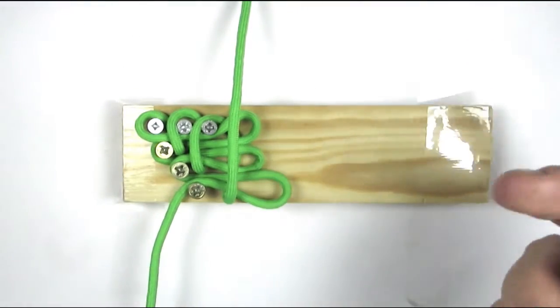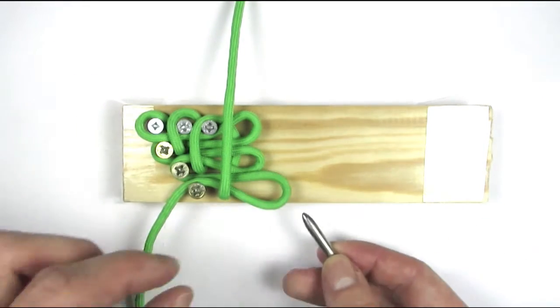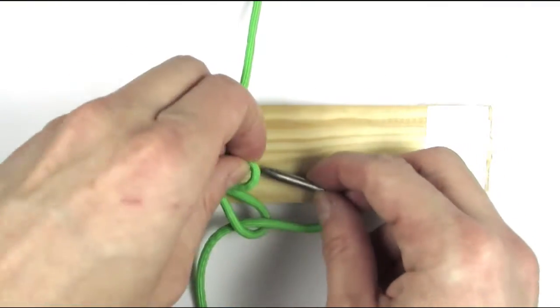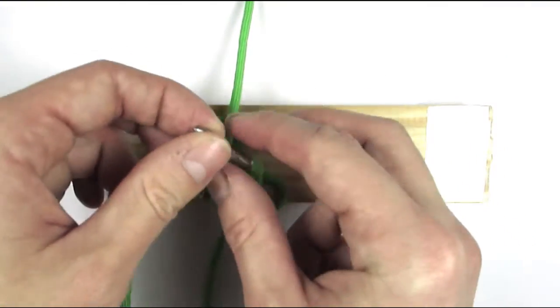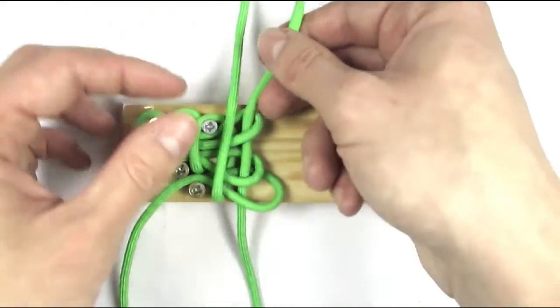So here we're going to enter all three loops from the bottom. So under the loop, under the second loop, and under the third loop with our bottom cord.